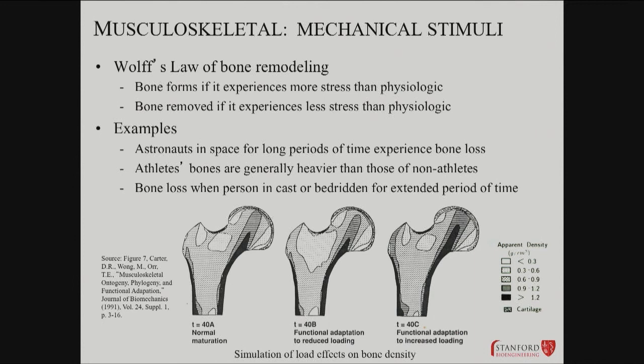Thinking about the hip joint — right at the neck of the femur there are a lot of interesting things happening. This is where a lot of the fractures occur associated with increased age. You can actually see that right around that neck is where some of the most interesting adaptations happen. With increased loading, there's a lot of increased bone density there; with decreased loading, that region is where you tend to see reduced density. The precise dimensions of where remodeling happens are very important.